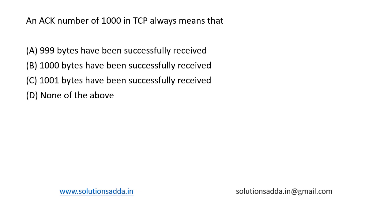This is a question from computer networks: an ACK number of 1000 in TCP always means that — (A) 999 bytes have been successfully received, (B) 1000 bytes have been successfully received, (C) 1001 bytes have been successfully received, or (D) none of the above.